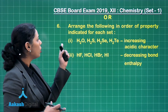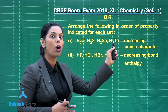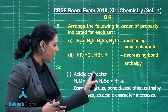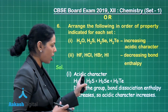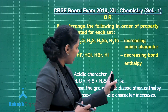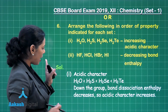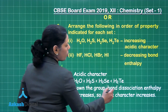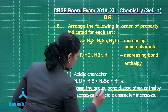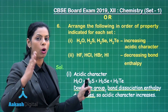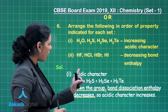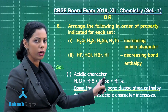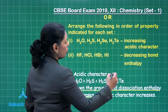These are all elements of group 16 whose hydrides are present. The increasing order of acidic character is: H2O, H2S, H2Se, and then H2Te. The reason is that down the group, bond dissociation enthalpy decreases — specifically the H–O, H–S, H–Se, and H–Te bonds. Writing this order gives you 1 mark.